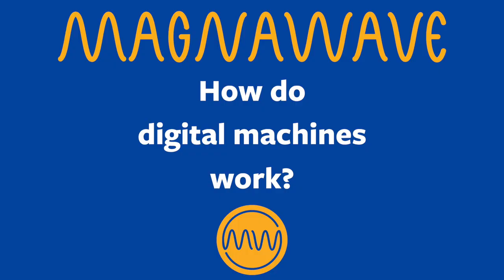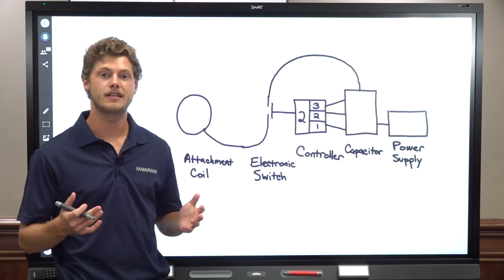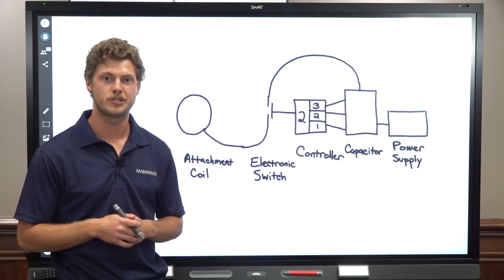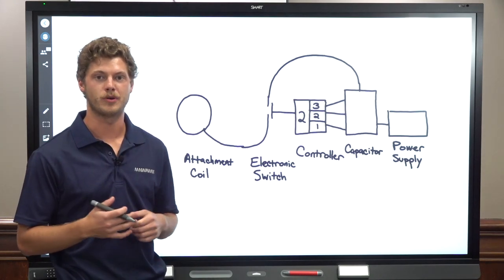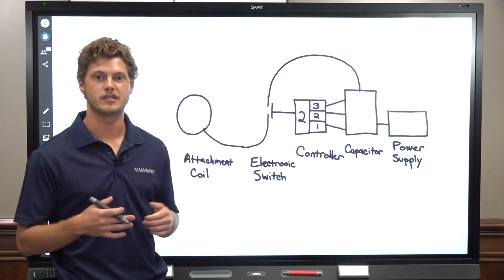Digital machines do not use spark chambers to control their pulsing. Instead, they use an electronic switch and a controller to actuate each pulse. But all of the rest of the basic components are the same.